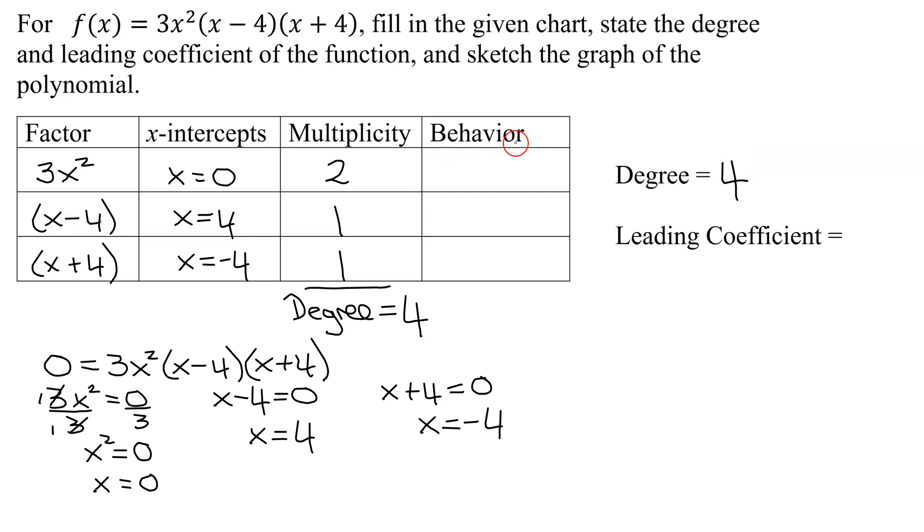And now we have to look at the behavior at each of these intercepts. So remember, if the multiplicity of an x-intercept is even, the graph is going to bounce and turn around. So I'm just going to write bounce. That means it doesn't cross the x-axis.